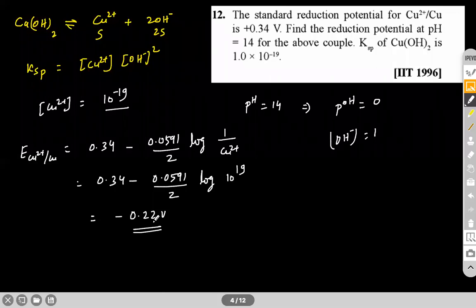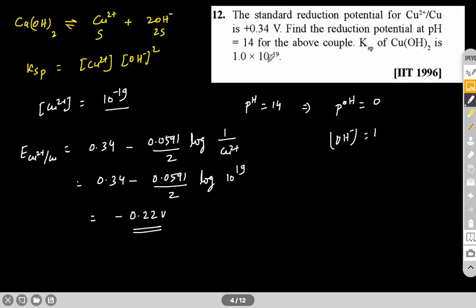The key point: we need the concentration of Cu²⁺, but we cannot use the solubility expression because the pH of the solution is given. H⁺ and OH⁻ are already present; in the presence of these ions, the solubility may differ. That's why we use Ksp = [Cu²⁺][OH⁻]² with [OH⁻] = 1, not the 4S³ expression.